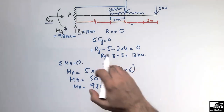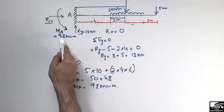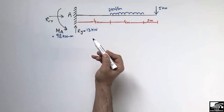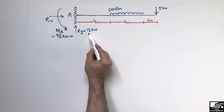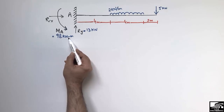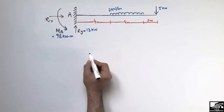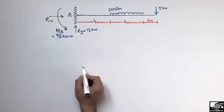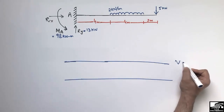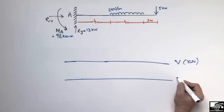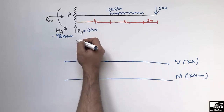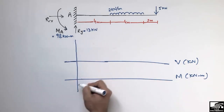So the first step is to calculate support reactions: Ry = 13 kN and MA = 98 kN·m. Now we can draw the shear force and bending moment diagram. We draw the reference lines — one axis for shear force in kilonewtons and another for bending moment in kilonewton-meters.